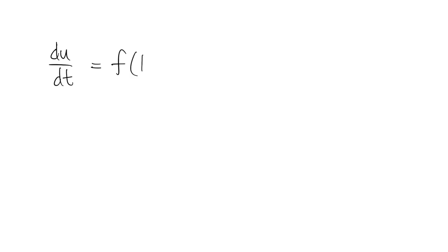Here again is our first-order initial value problem. We call the solution u the dependent variable, and t we call the independent variable.